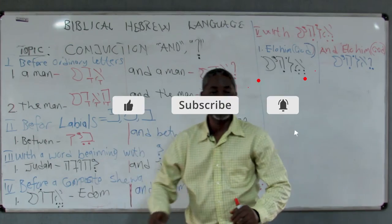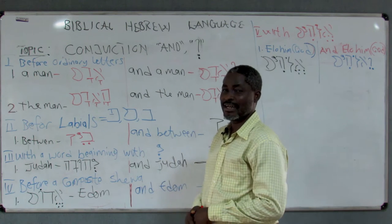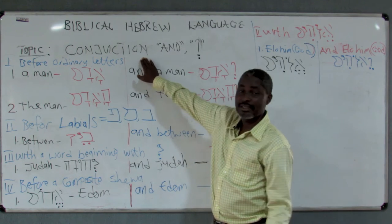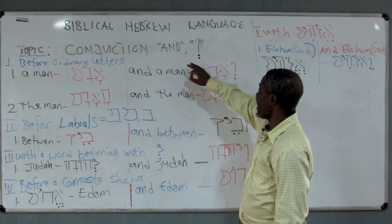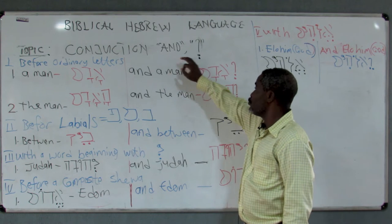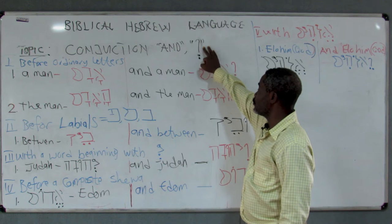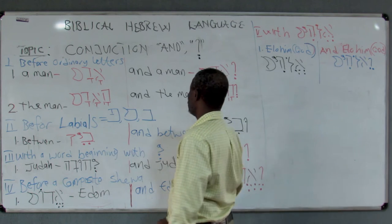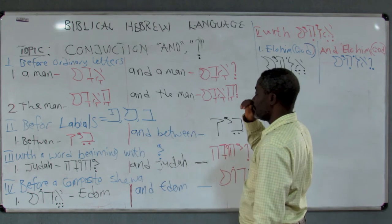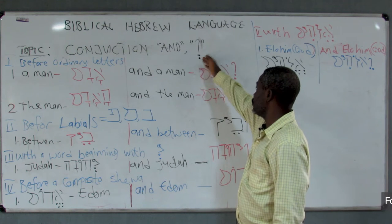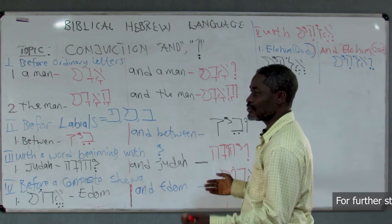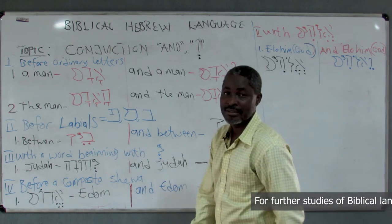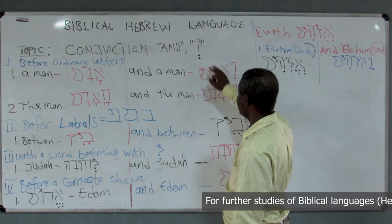Welcome to biblical Hebrew class. We want to look at the conjunction, which means 'and,' rendered in Hebrew as 'waw.' You have the waw with sere, and waw with simple shewa. With simple shewa, when the word has no vowel, we put the half-vowel, which is simple shewa.